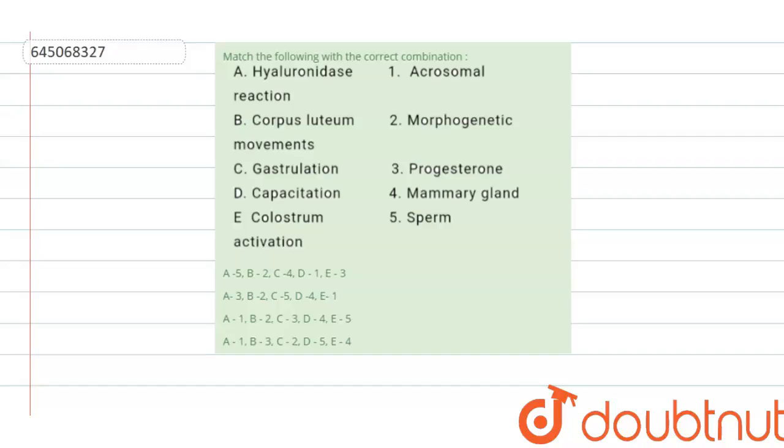We'll first try to match the terms in column one with that of column two. So here, hyaluronidase reaction is given. What is this hyaluronidase? It is a substance produced by the acrosome. Acrosome is nothing but the anterior most region of the sperm.